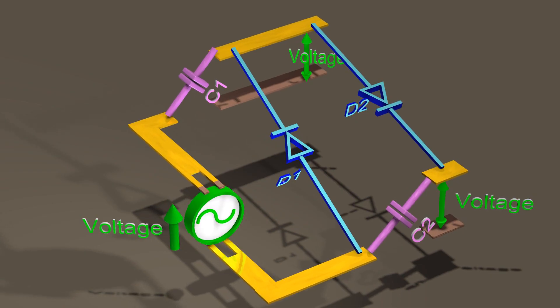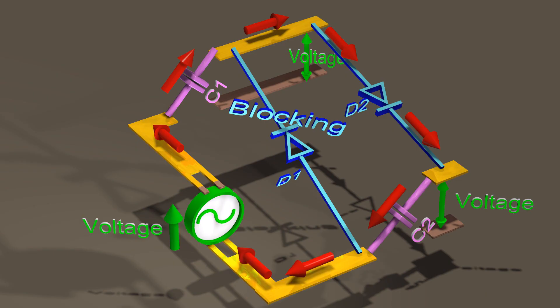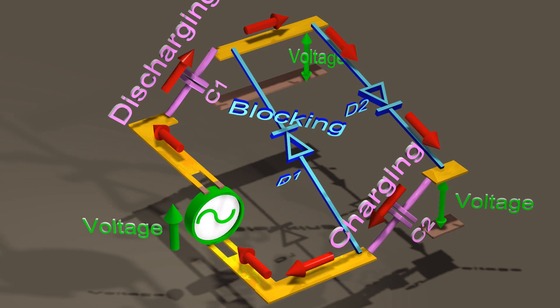When the AC input voltage changes direction yet again, diode 1 will block current from flowing through it, and the only path the current can take is by passing through diode 2, thereby discharging capacitor 1, but charging capacitor 2 to an even higher voltage.